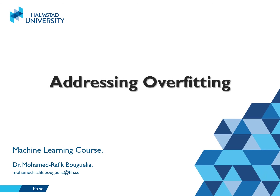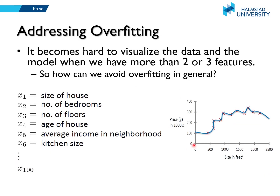Now that we know how to estimate the generalization error and what overfitting is, let's see how to overcome it. Previously we could detect overfitting just by visualizing the data and model, but it is very hard to visualize data when you have more than two or three features. Usually data has thousands of features — for example, the housing dataset might include number of bedrooms, floors, age, average neighborhood income, kitchen size, and so on. So how can we avoid overfitting in general with multi-dimensional data?